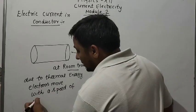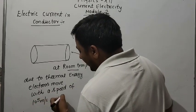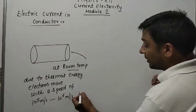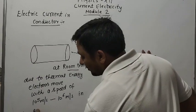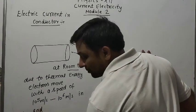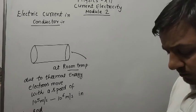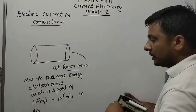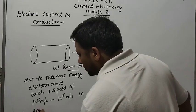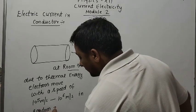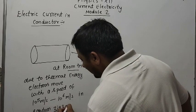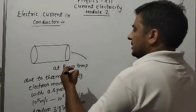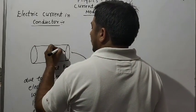Due to this thermal energy, electrons move with a speed of 10 raised to power 5 to 10 raised to power 6 meter per second in random zigzag motion.